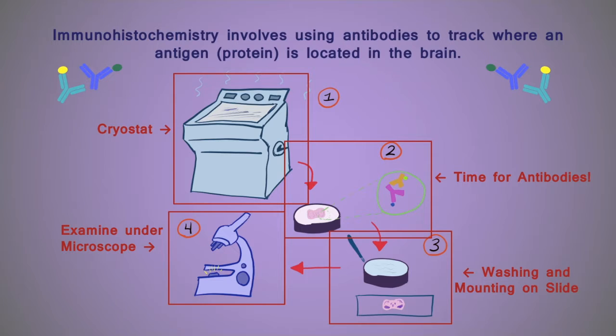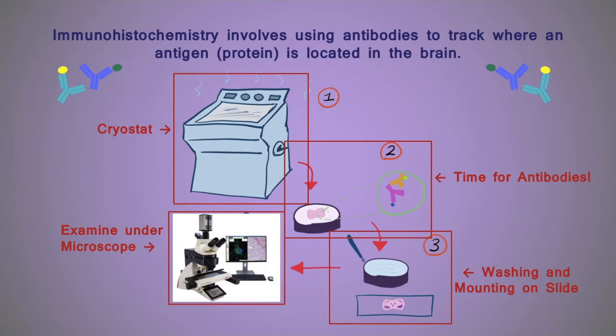Many modern fluorescent microscopes are also compatible with software programs that allow researchers to count the individual number of cells stained with the antibody for the purposes of quantifying how much of the target antigen is found in that tissue sample.